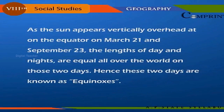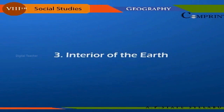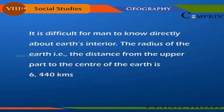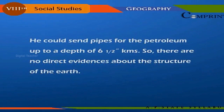As the sun appears vertically overhead at noon on the equator on March 21st and September 23rd, the lengths of day and night are equal all over the world on those two days; hence these two days are known as equinoxes. Regarding the interior of the earth, it is difficult for man to know directly about it. The radius of the earth — the distance from the surface to the center — is 6440 kilometers, and pipes for petroleum have been sent only to a depth of about six and a half kilometers, so there is no direct evidence about the structure of the earth.